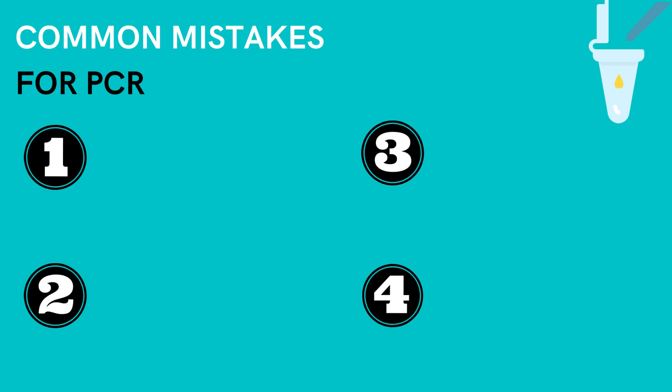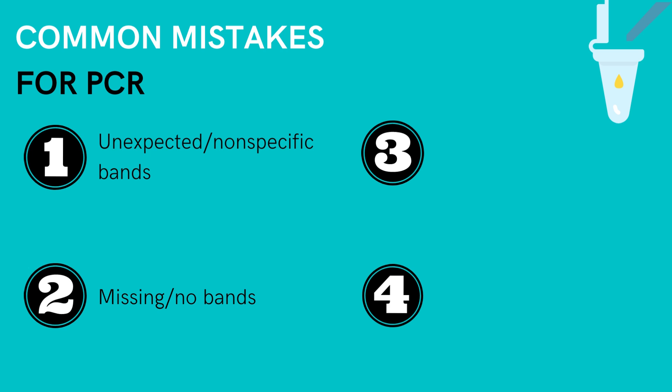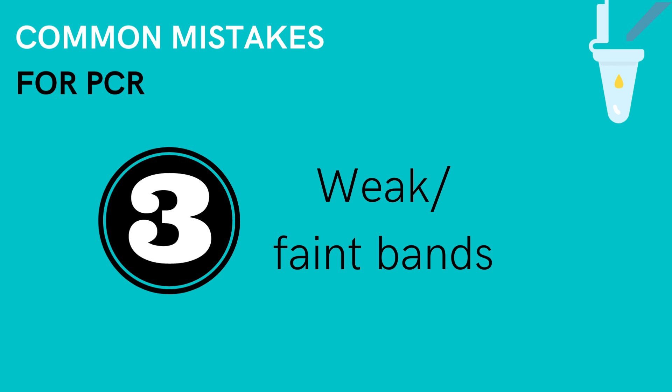However, during this process, there are common mistakes students make. Some of these include, but are not limited to, unexpected or nonspecific bands, weak or faint bands, missing or no bands, and smeared bands. Of these four common mistakes, weak or faint bands seem to be the most common.